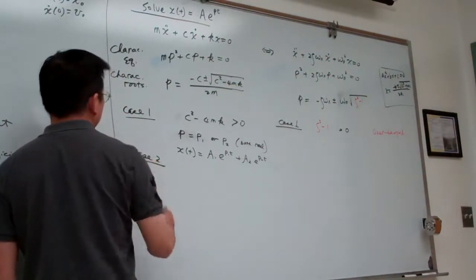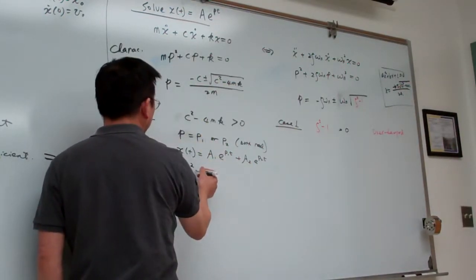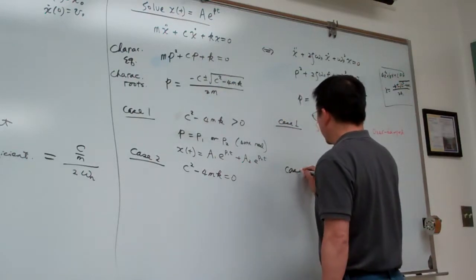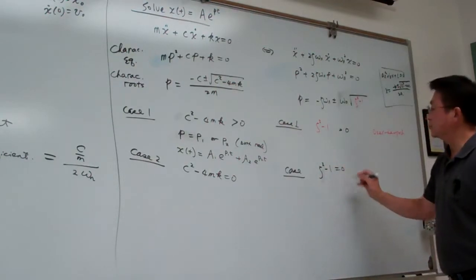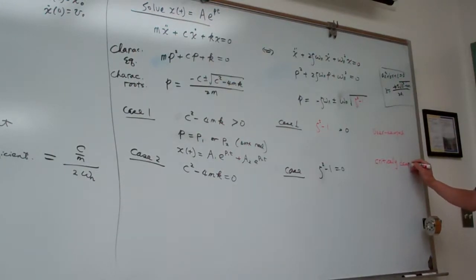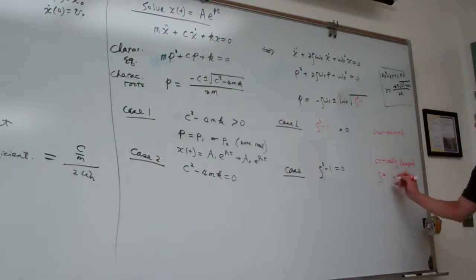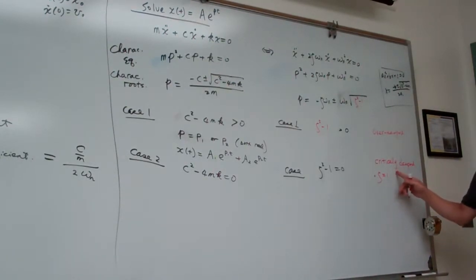Case 2: if the number within the square root equals zero, we call this the critically damped system. For the critically damped system, the damping ratio zeta equals 1 — that is the first note to keep in mind. By definition with zeta = 1, it is called the critically damped system.